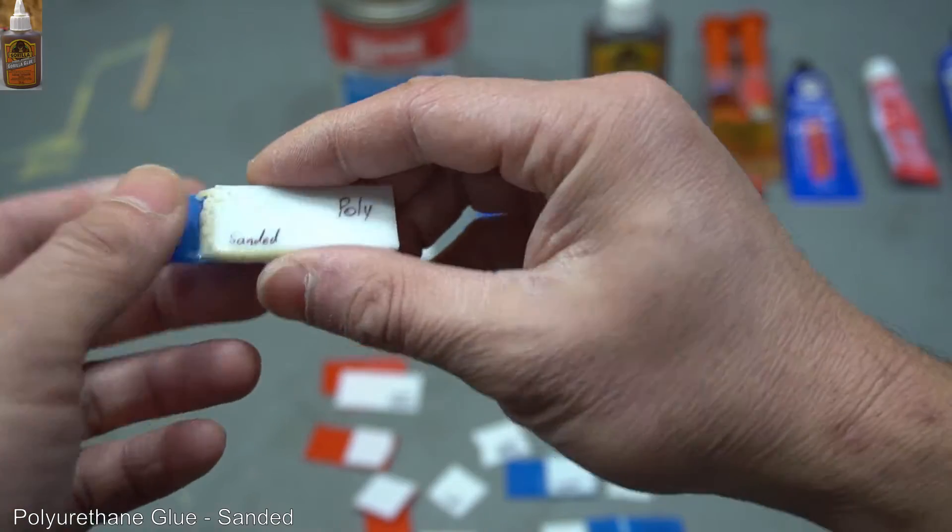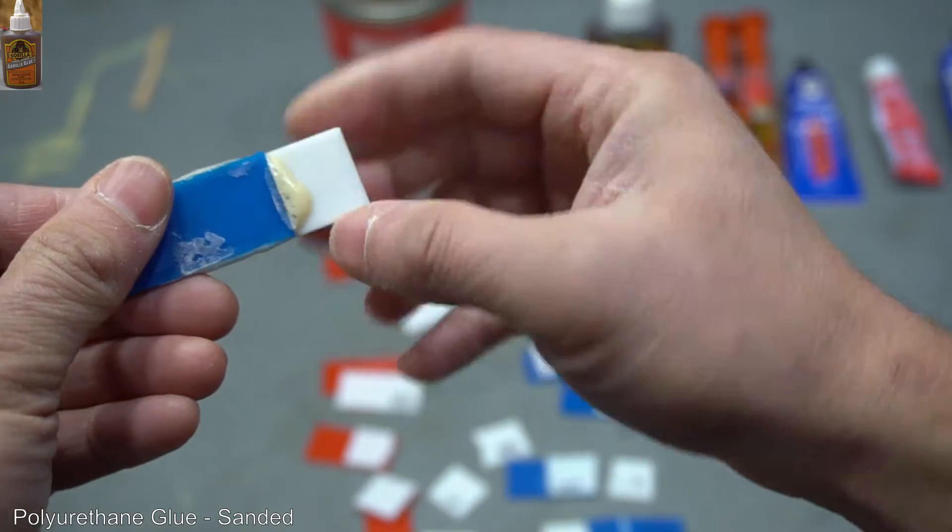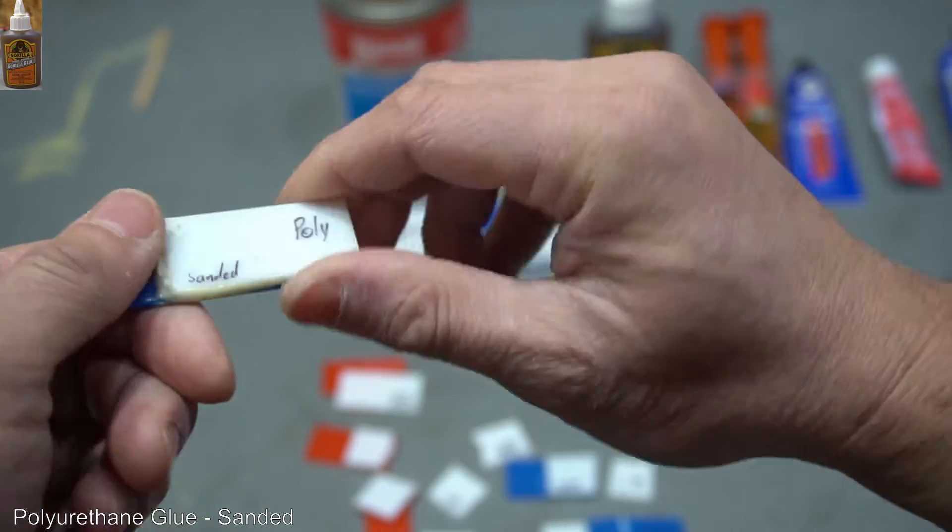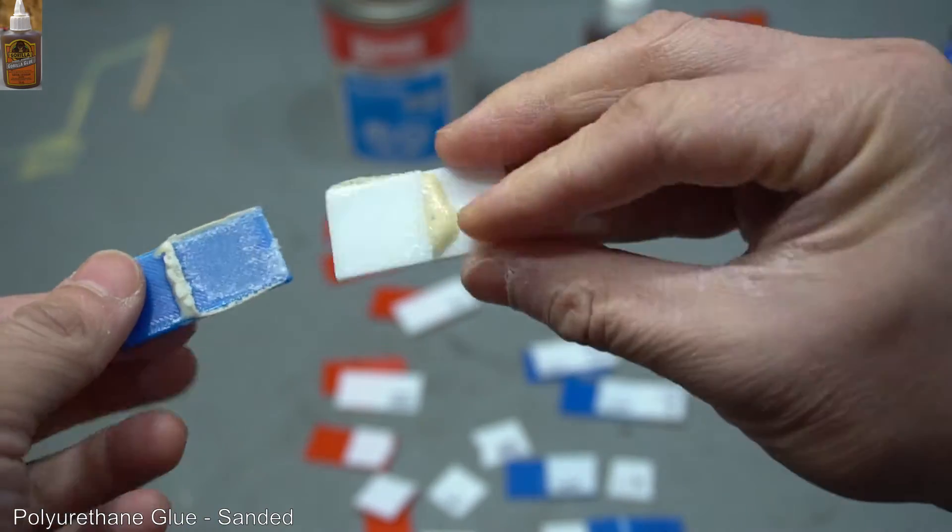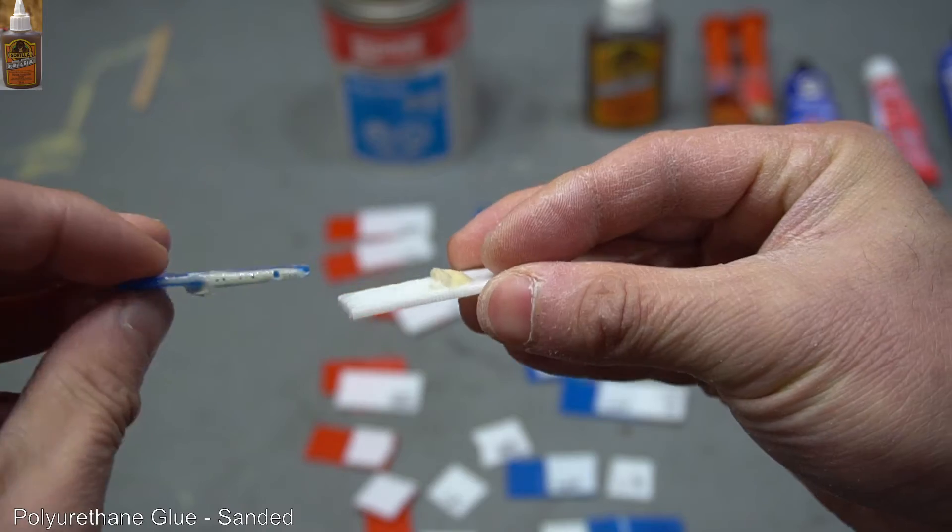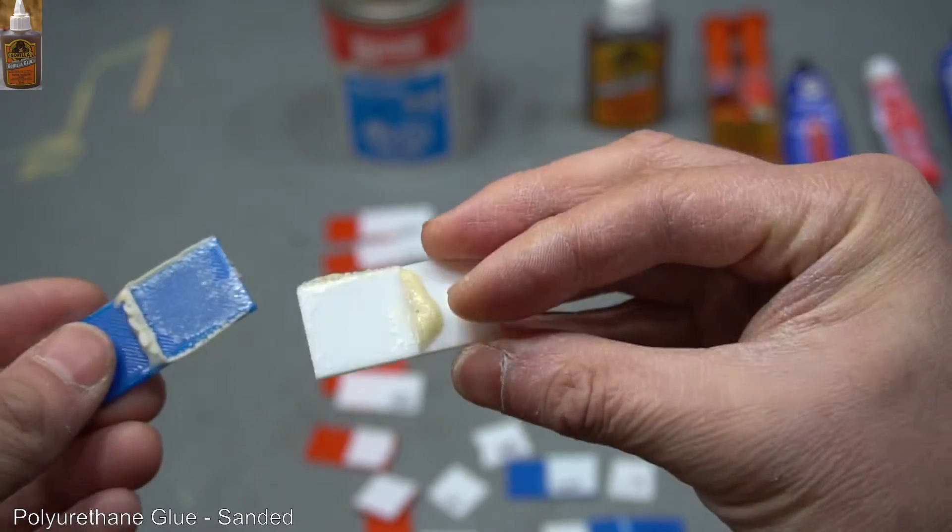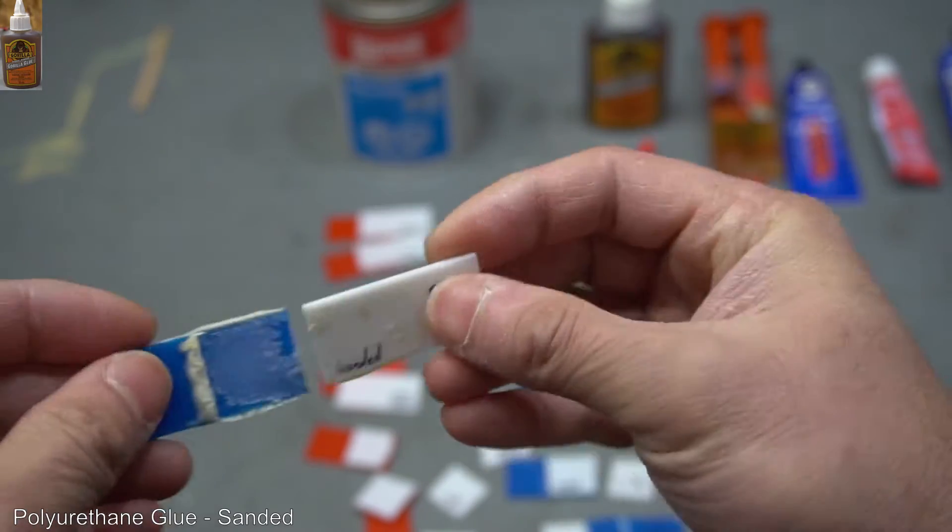Polyurethane, sanded. This one foamed up a bit too because I added a little too much water to activate it. Same thing. Polyurethane, AKA Gorilla Glue, that broke really, really easy. Took almost very little force.